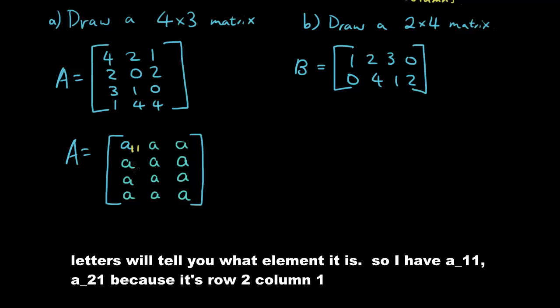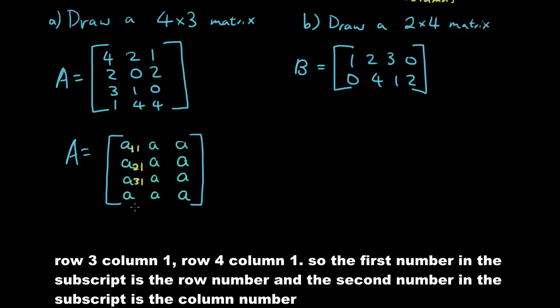So the subscript of the letters will tell you what element it is. So I have A11, A21 because it's row 2, column 1, row 3, column 1, row 4, column 1. So the first number in the subscript is the row number and the second number in the subscript is the column number.